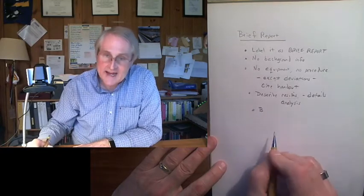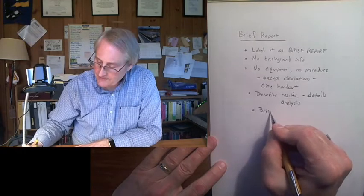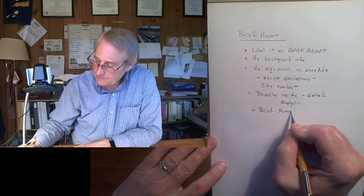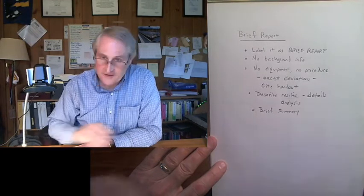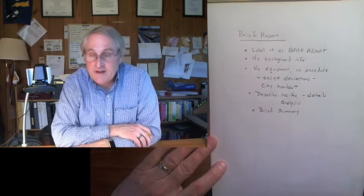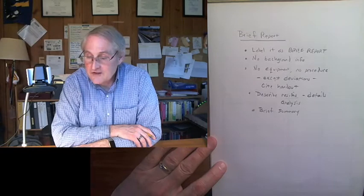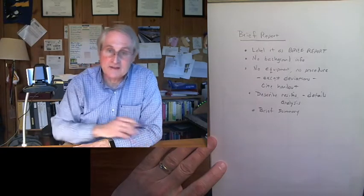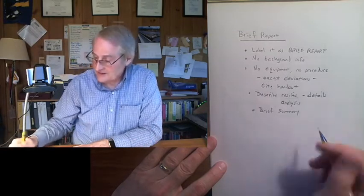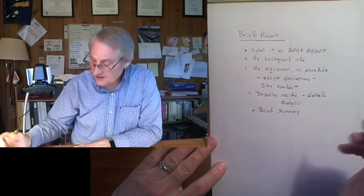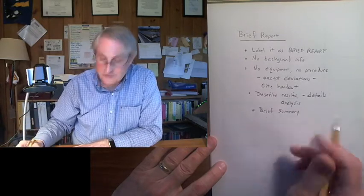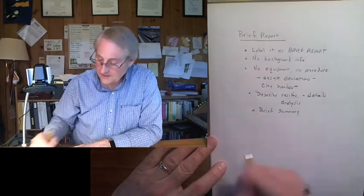You should always in any lab report have a brief summary. This summary could be really brief. We measured the index of refraction and got this, and that means it's probably this kind of glass. Or it rules out it being this kind of glass. There are three kinds of glass it might be, but no more. A couple of sentences. That's it.